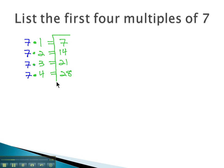These are the first 4 multiples of 7, or the first 4 things we get when we multiply 7 by something. 7 times 1 is 7, 7 times 2 is 14, 21 and 28, the first 4 multiples.